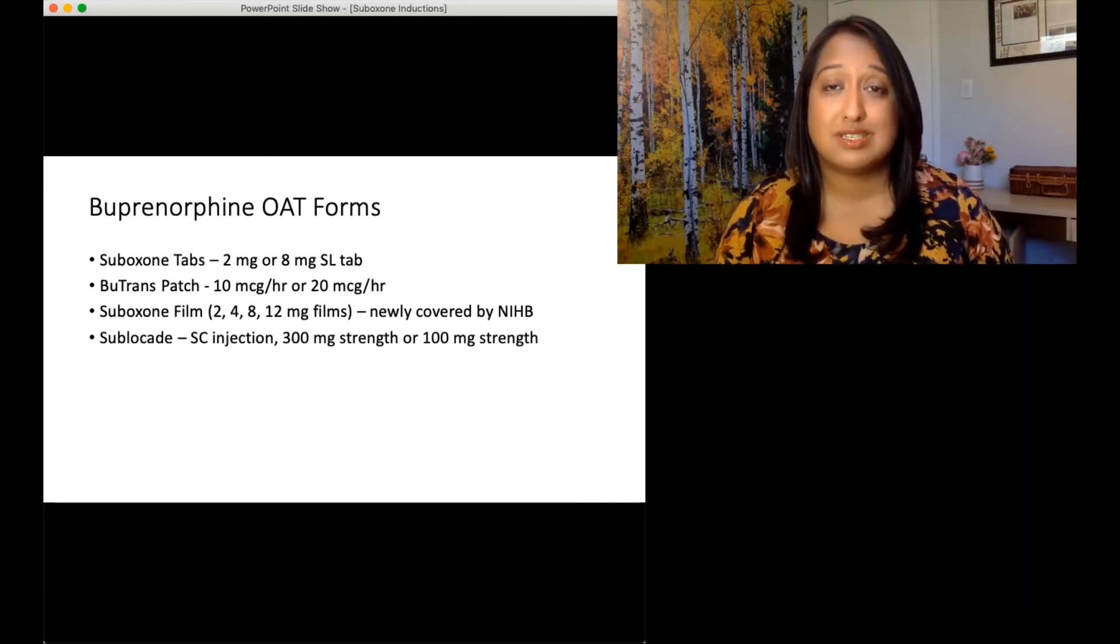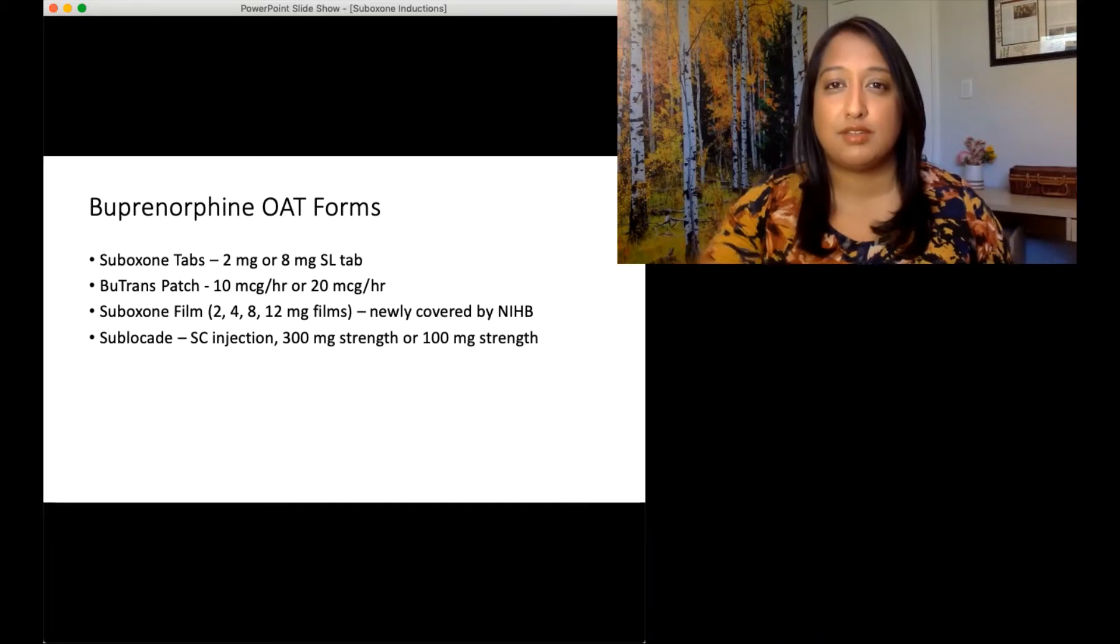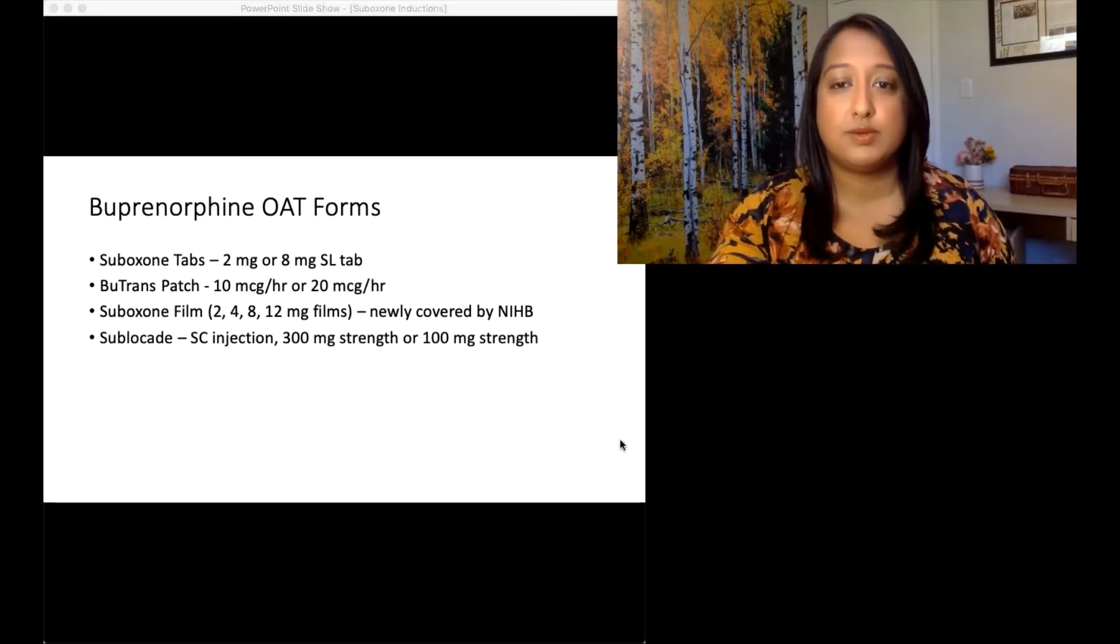And then of course, there's the Sublocade injection, which is sort of the depot version of Suboxone. It's a subcutaneous injection that's monthly. It's at 300 milligram strength or 100 milligram strength. We're going to get into each of these things, how to use them.